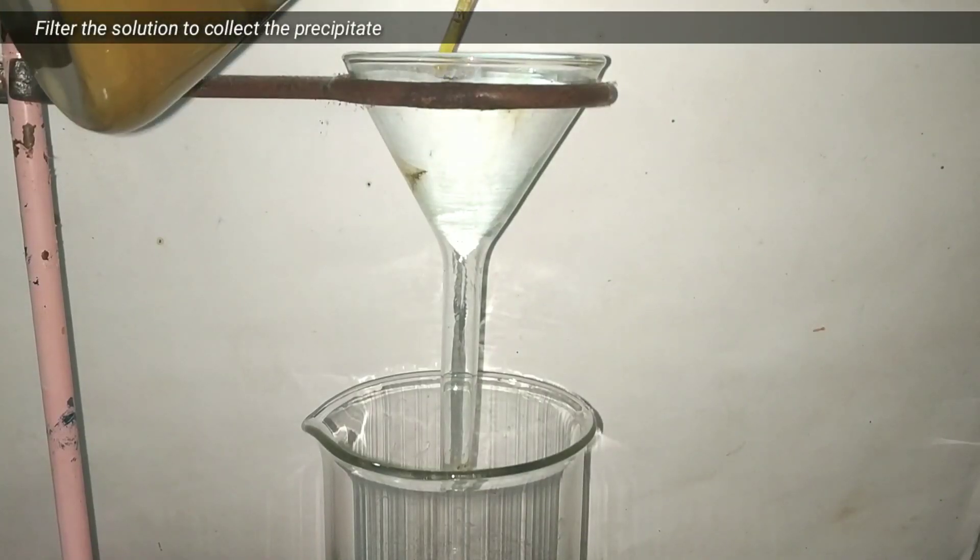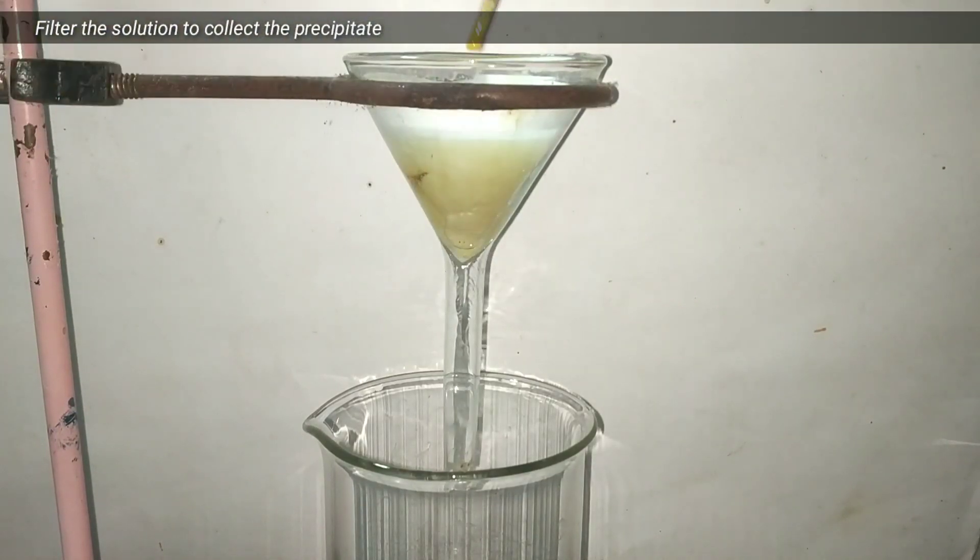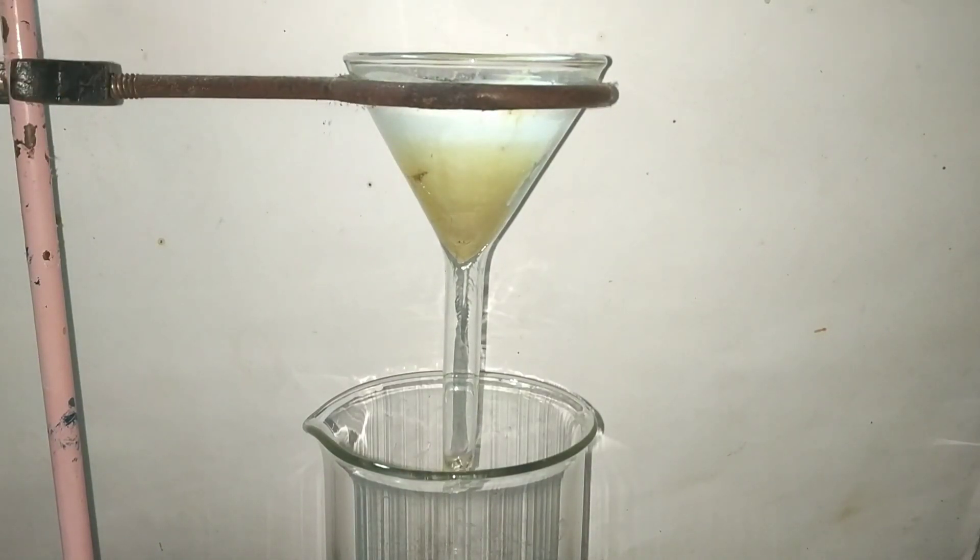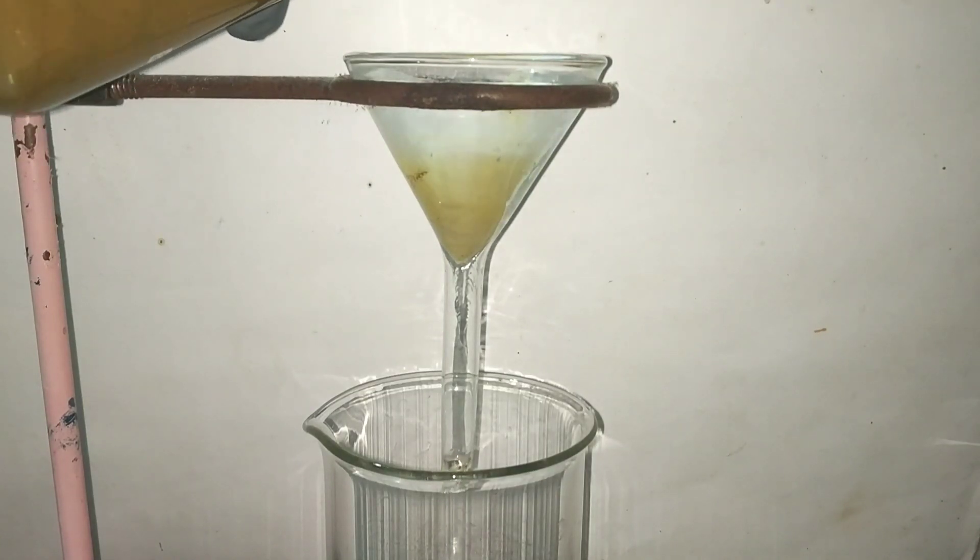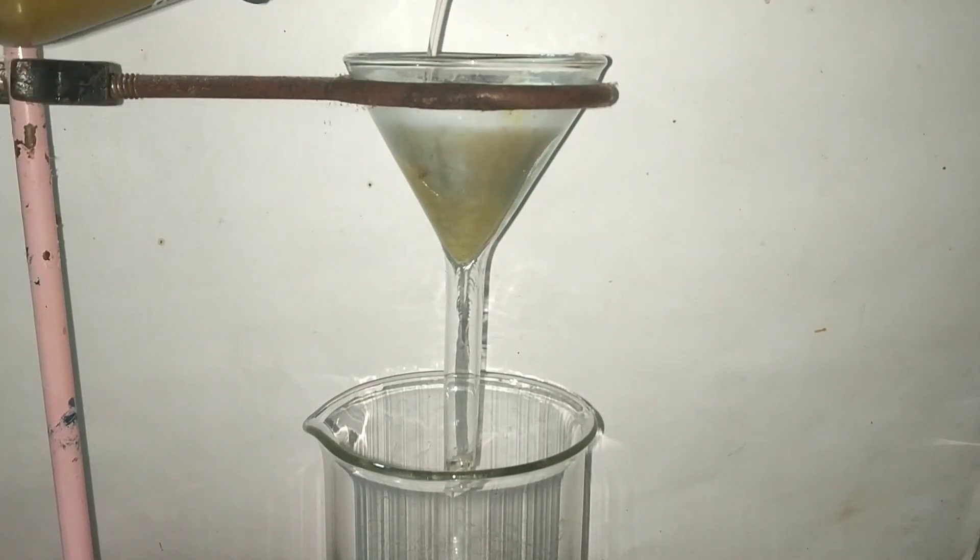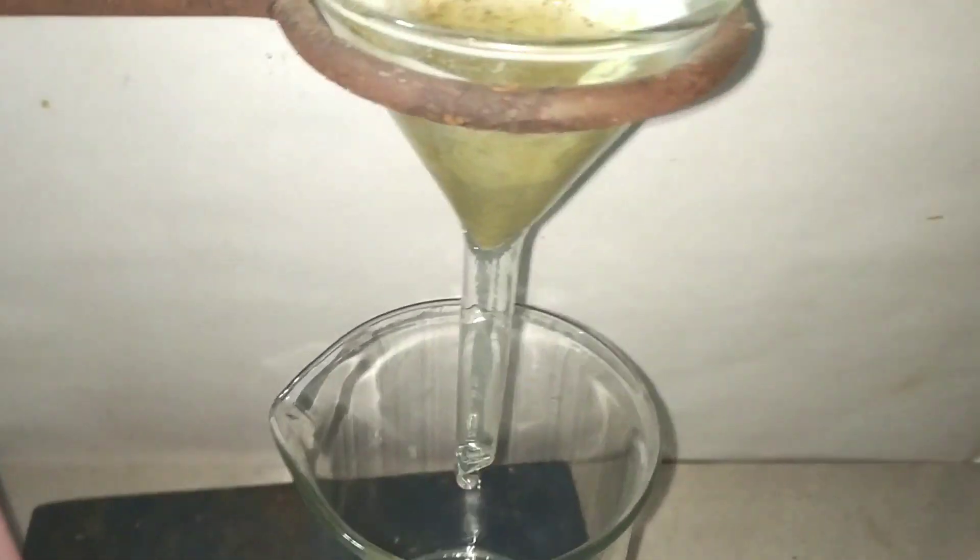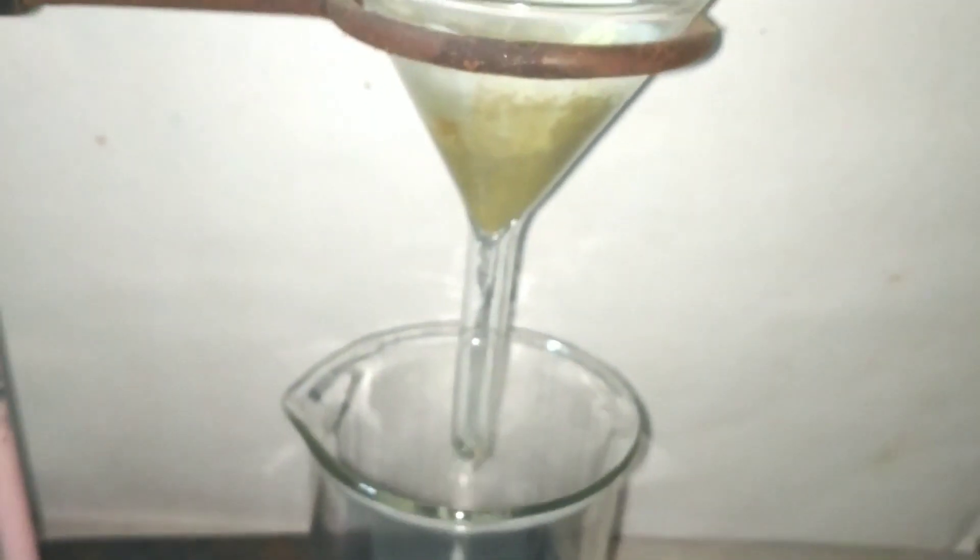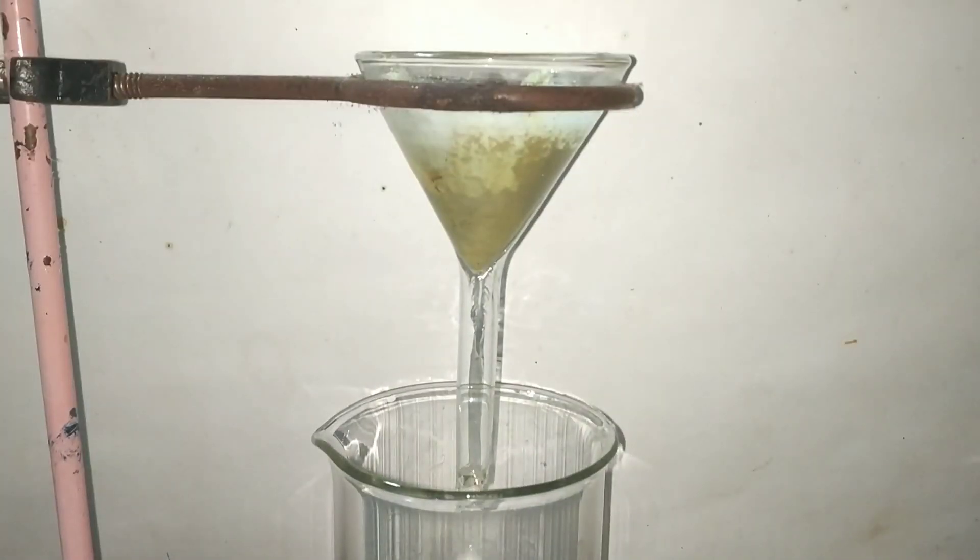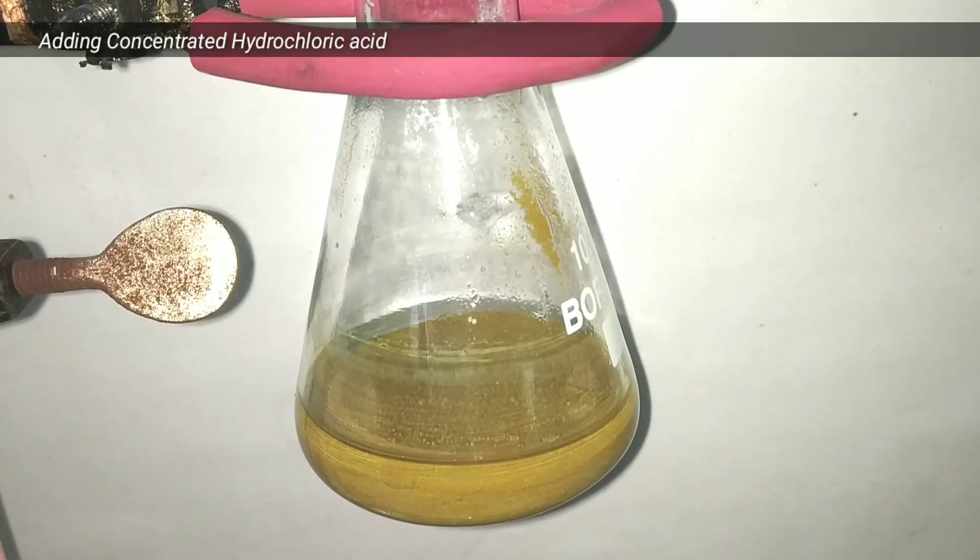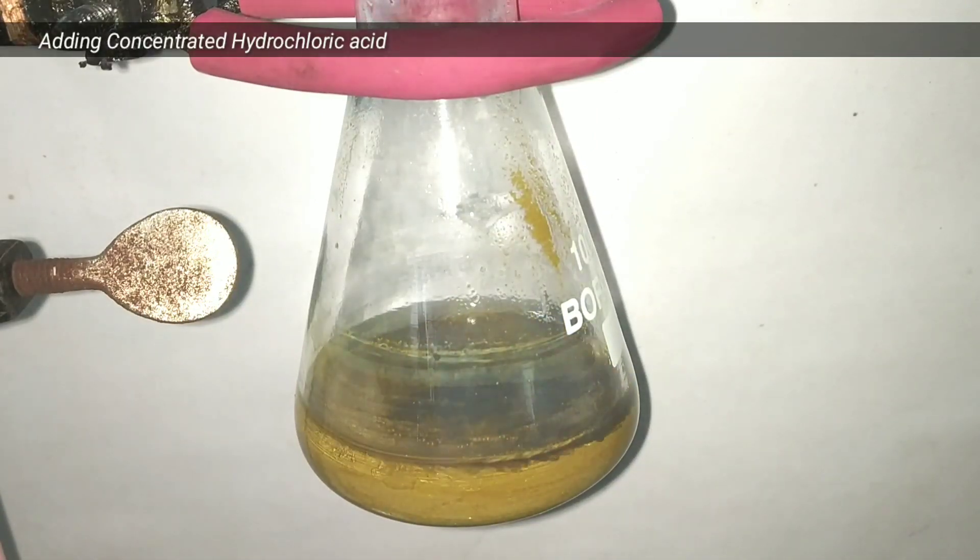We then filtered the solution to collect the precipitate which contains a mixture of mercury oxides. After the filtration step, we washed the precipitate a couple of times with distilled water to remove the excess alkali present in it.